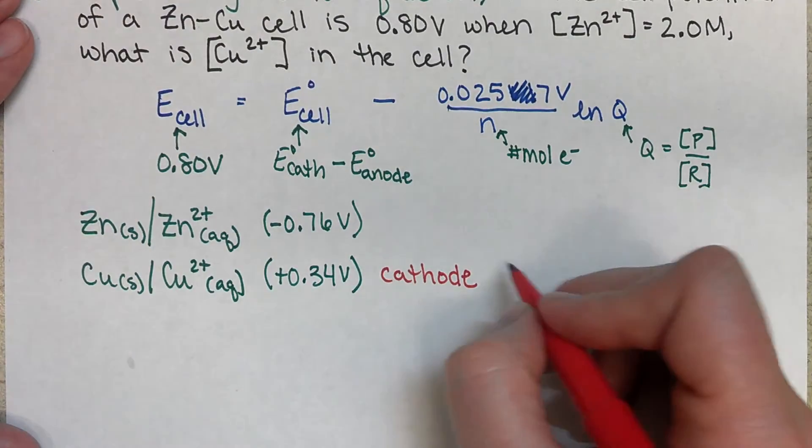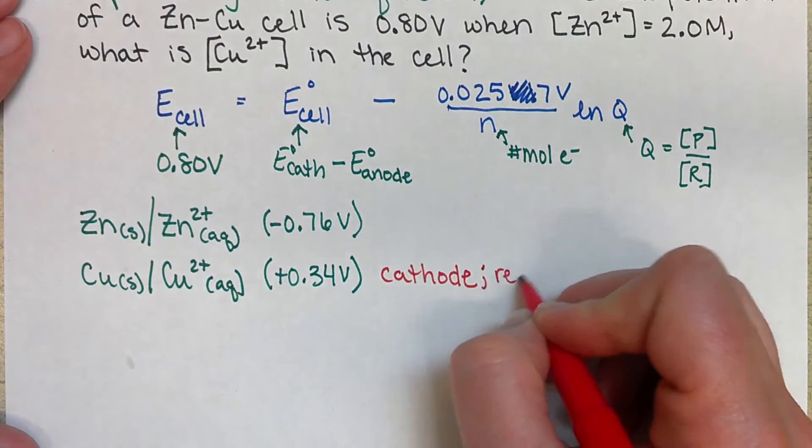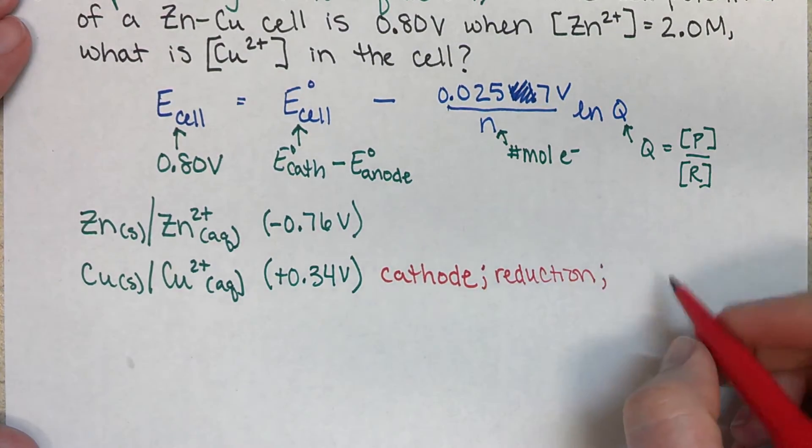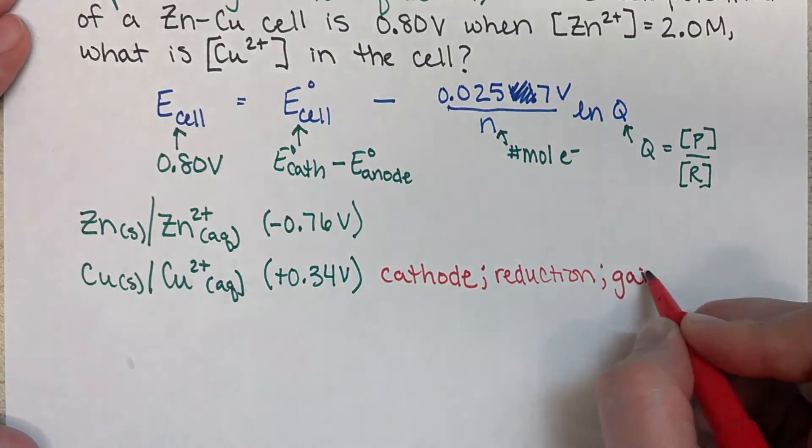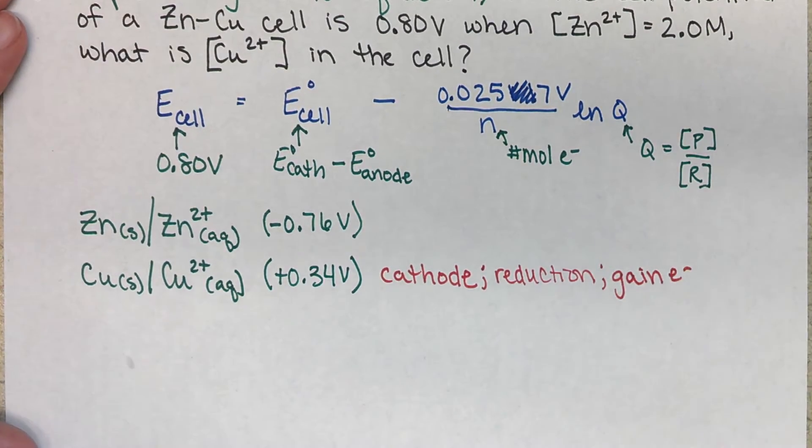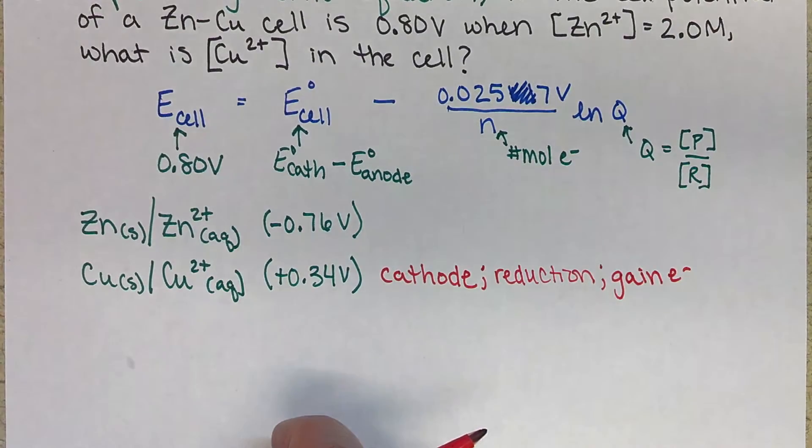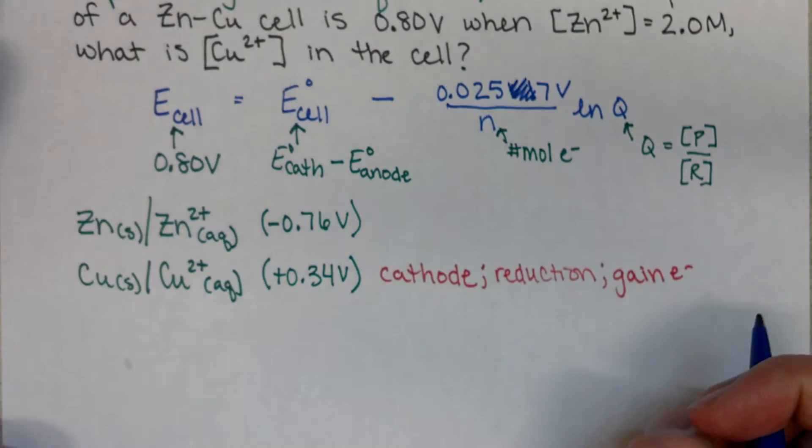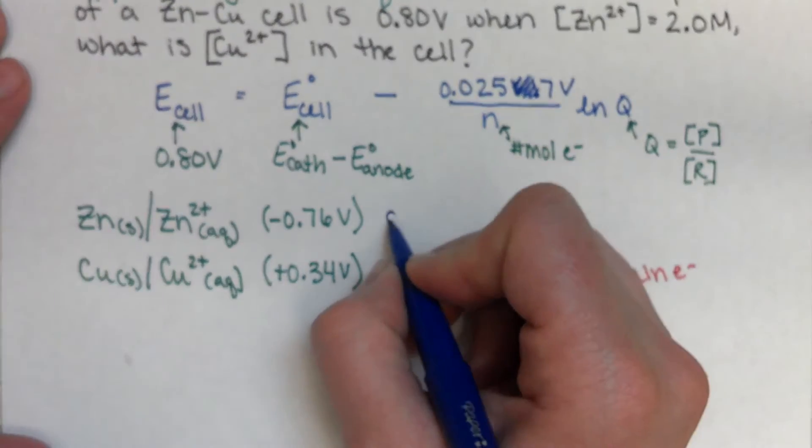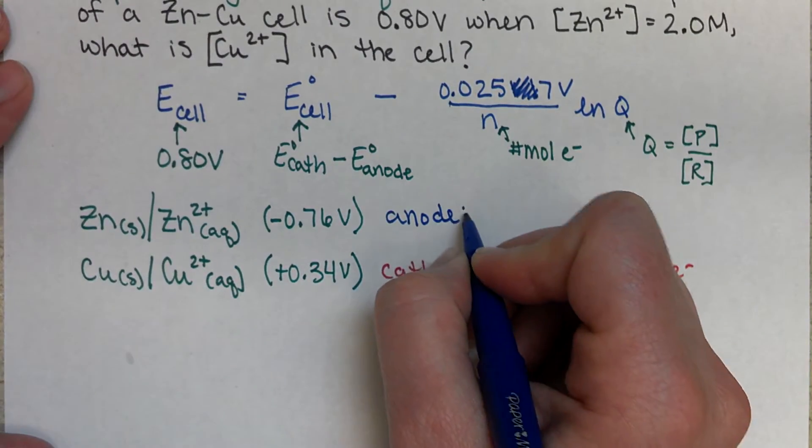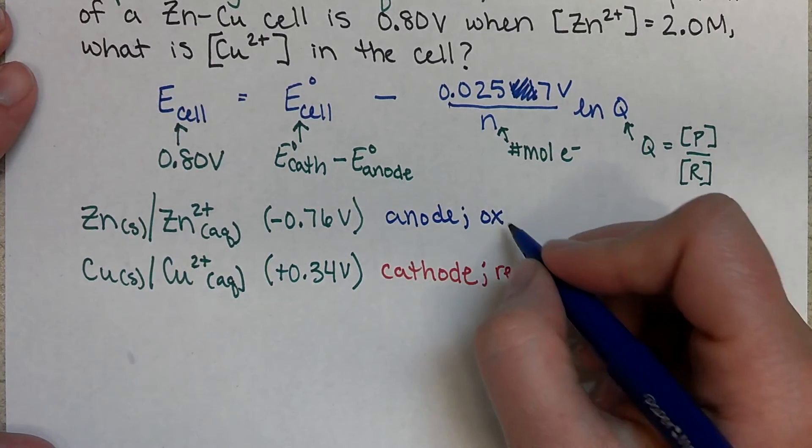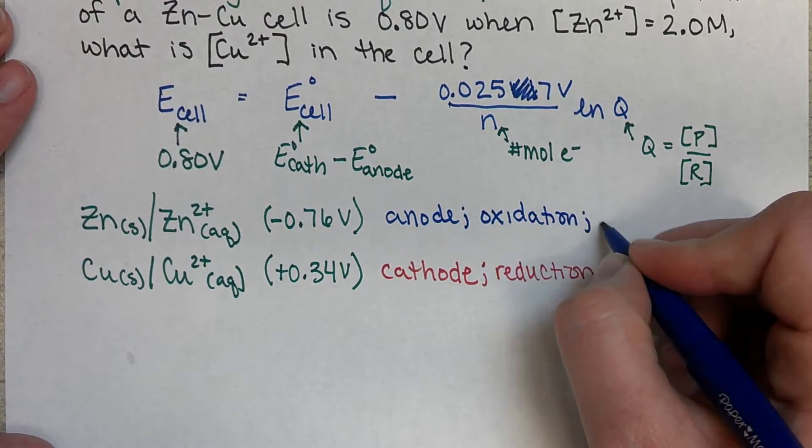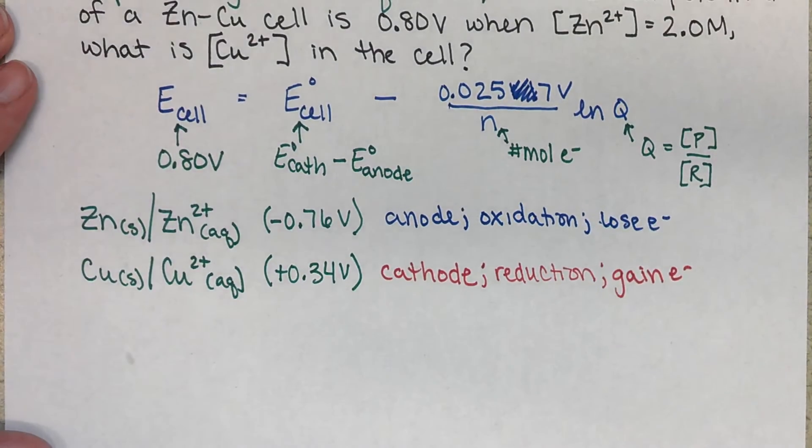And reduction happens at our cathode, or we're going to gain electrons at our cathode. And then our zinc would be our anode. That's where we have oxidation, or we're going to lose electrons.